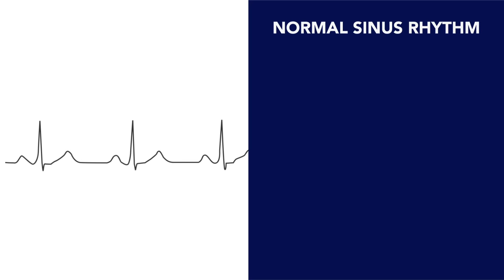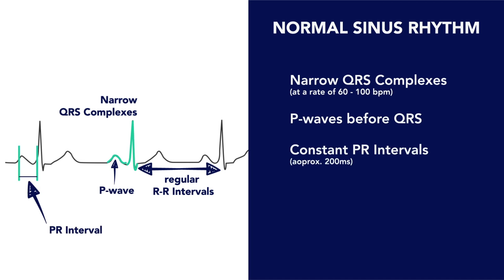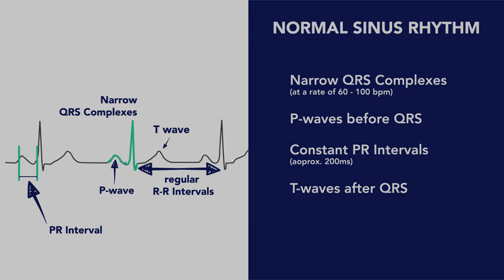So in summary, in normal sinus rhythm you will see narrow QRS complexes which occur regularly at a rate between 60 to 100 beats per minute. These are always preceded by P waves, and PR intervals that are constant, usually less than 200 milliseconds. And finally, T waves after QRS complexes, representing ventricular repolarization.